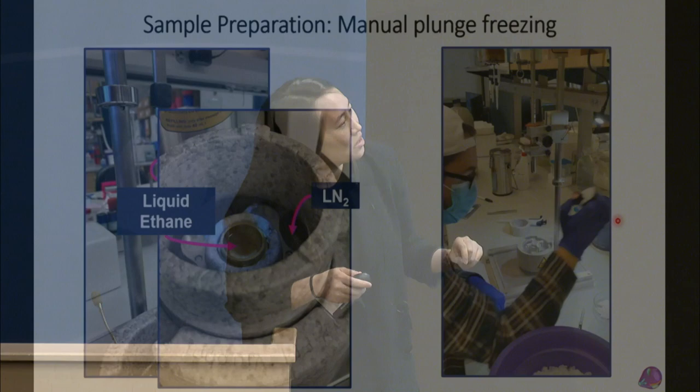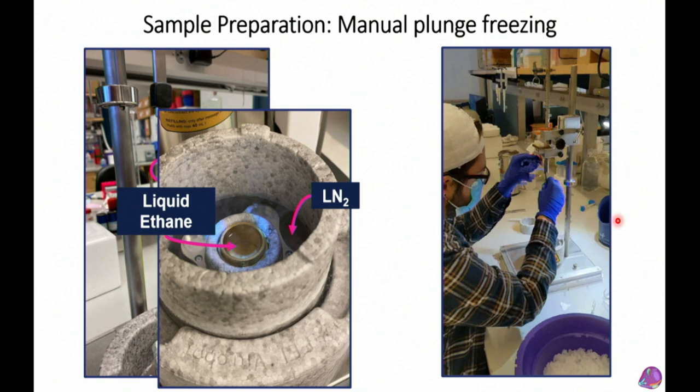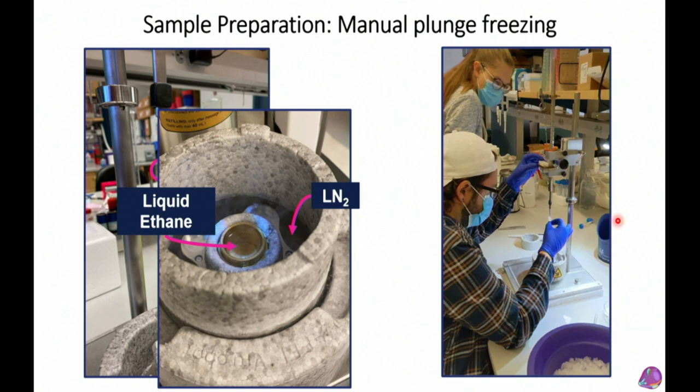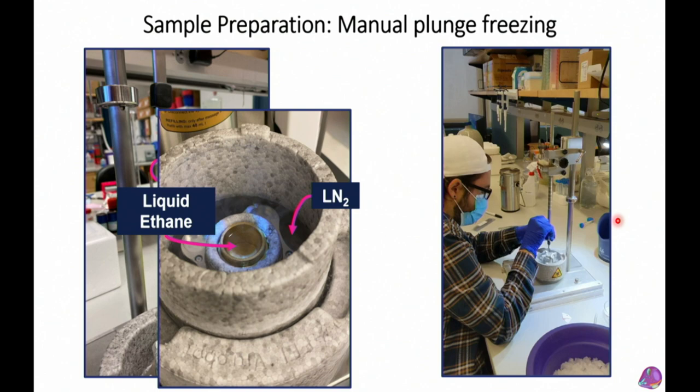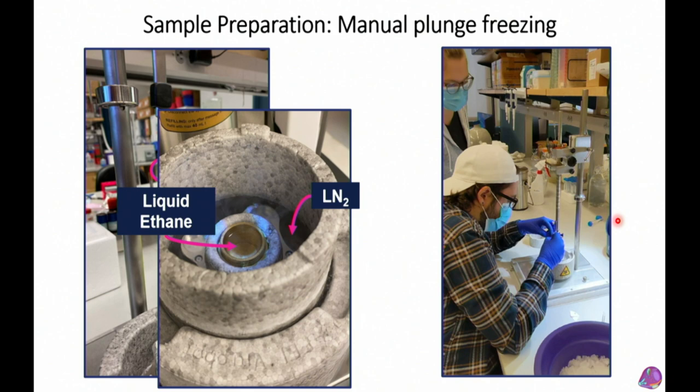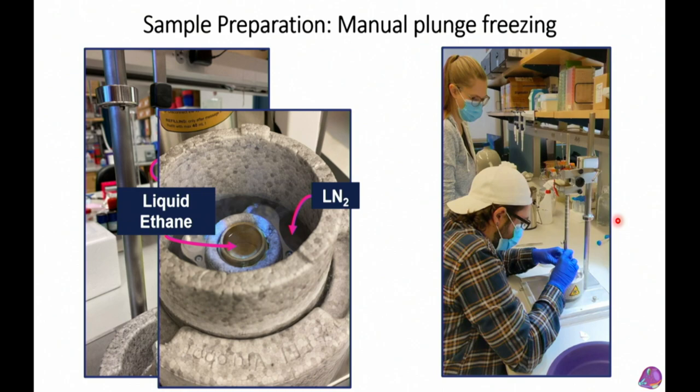From the moment of plunge-freezing, the grid never leaves liquid nitrogen until we're done imaging. We pick it up, put it in a box inside liquid nitrogen, and take the subway down to the microscope.